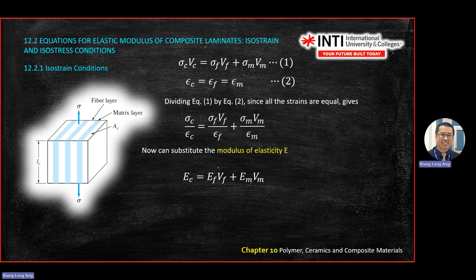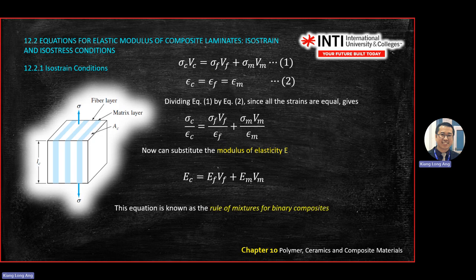For composite questions, these three equations are important: (1) force balance F_C = F_F + F_M, (2) the area-to-volume replacement, and (3) E_C = E_F · V_F + E_M · V_M. In tests, you will be given a table and asked to choose which fiber and matrix to use based on a required elastic modulus. Note this formula is only for binary mixtures — two members only. For more than two members, you need to derive from first principles.